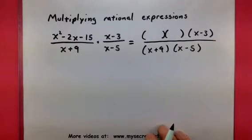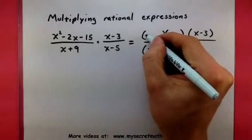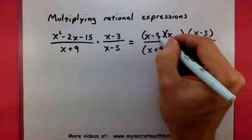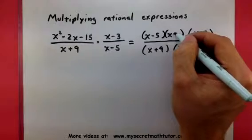Let's see, so what does it factor into? Well, I think it factors into an x minus 5 and an x plus 3.